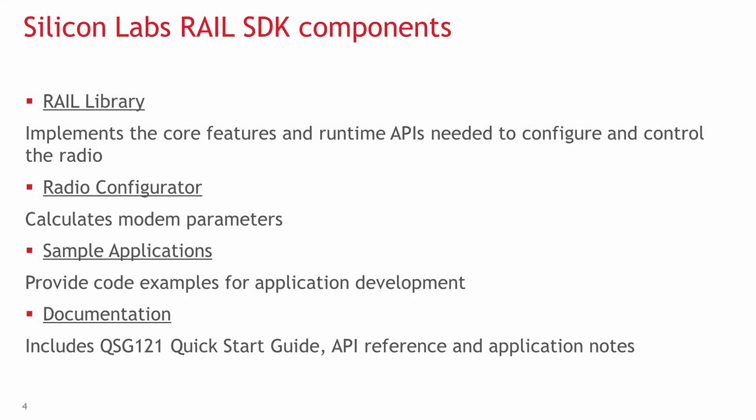The Silicon Labs RAIL includes the RAIL library, the radio configurator, sample applications, and documentation. The RAIL SDK is installed alongside and registered inside of the Simplicity Studio development environment. RAIL functionality is delivered as a library that you link to your application. The RAIL library implements the core features and runtime APIs needed to configure and control the radio — it is the heart of the RAIL SDK.